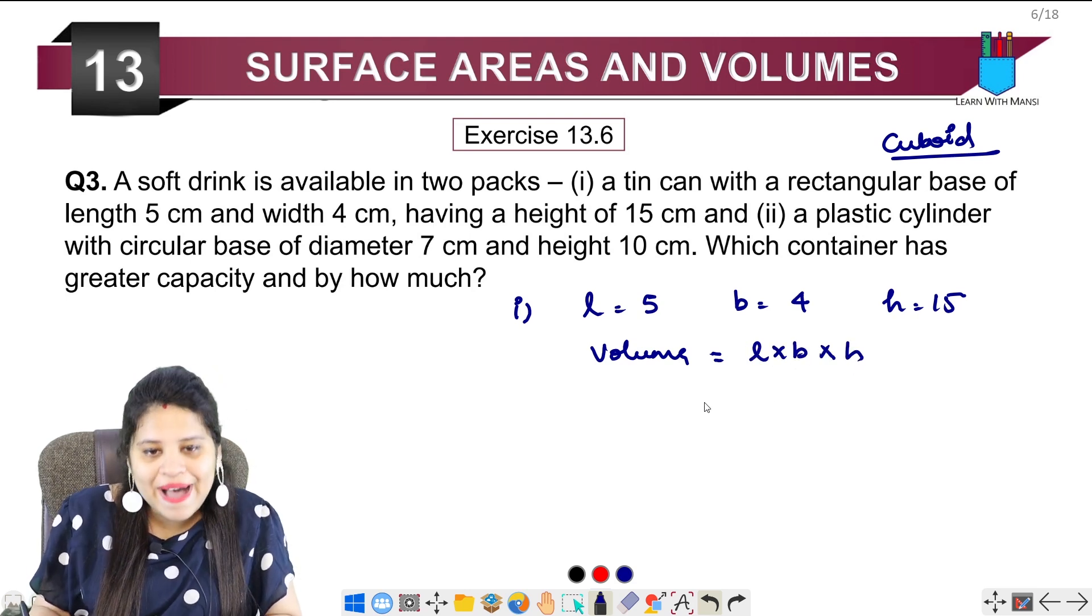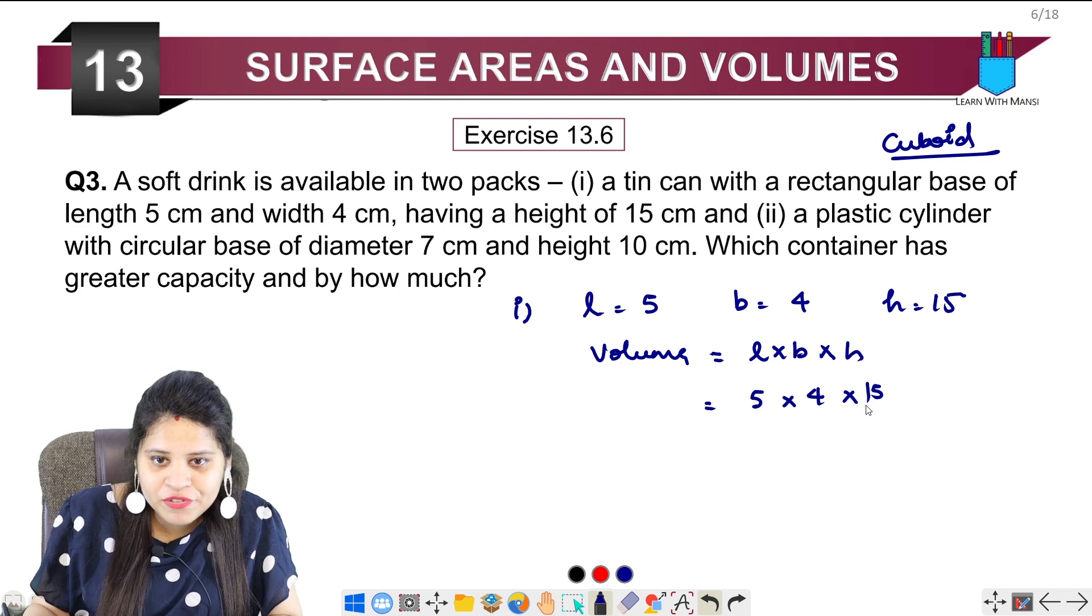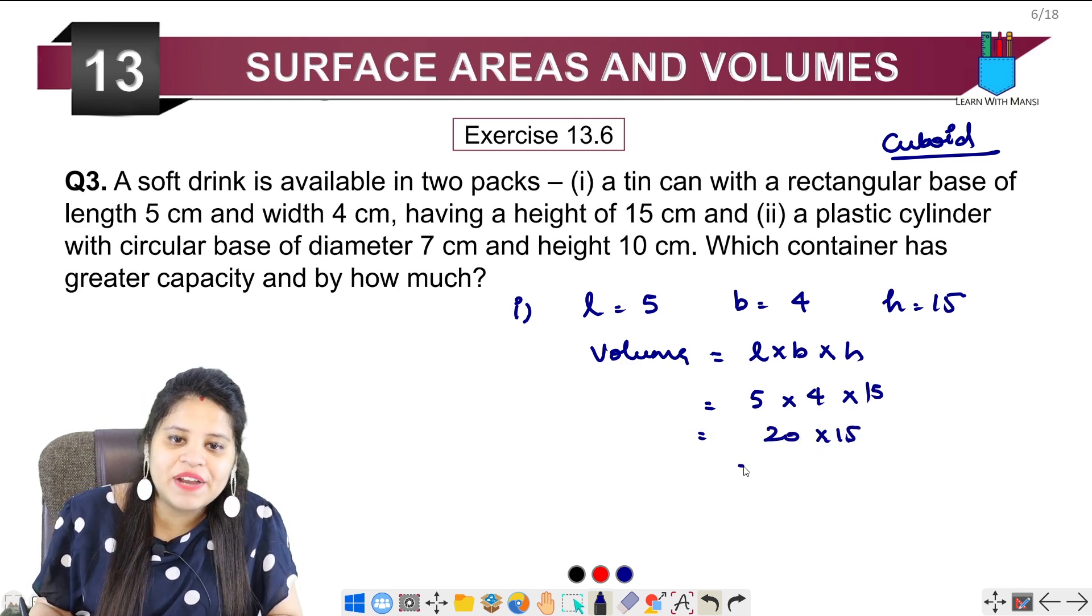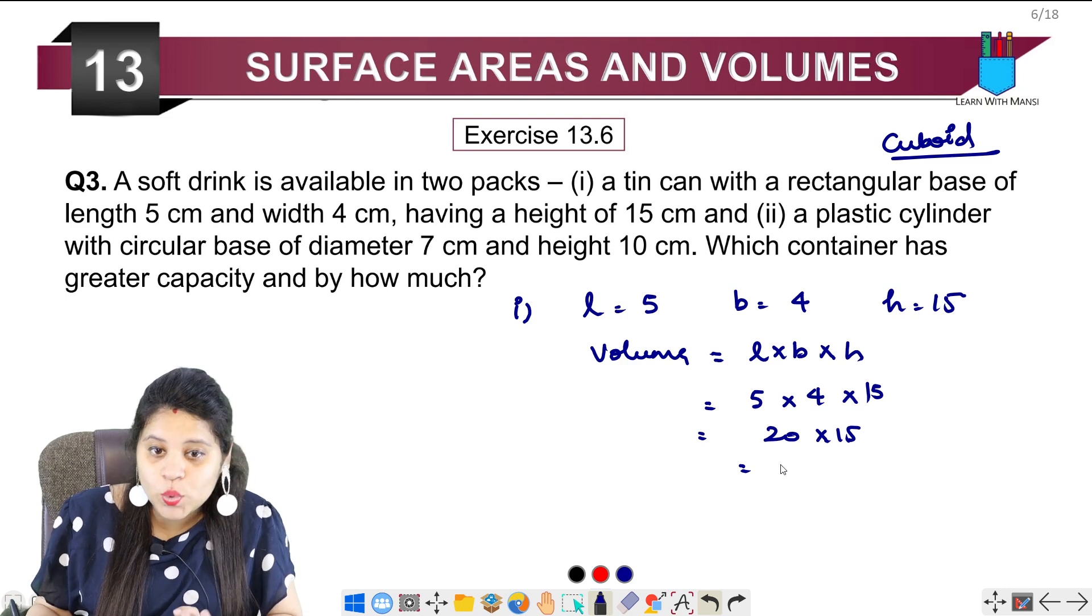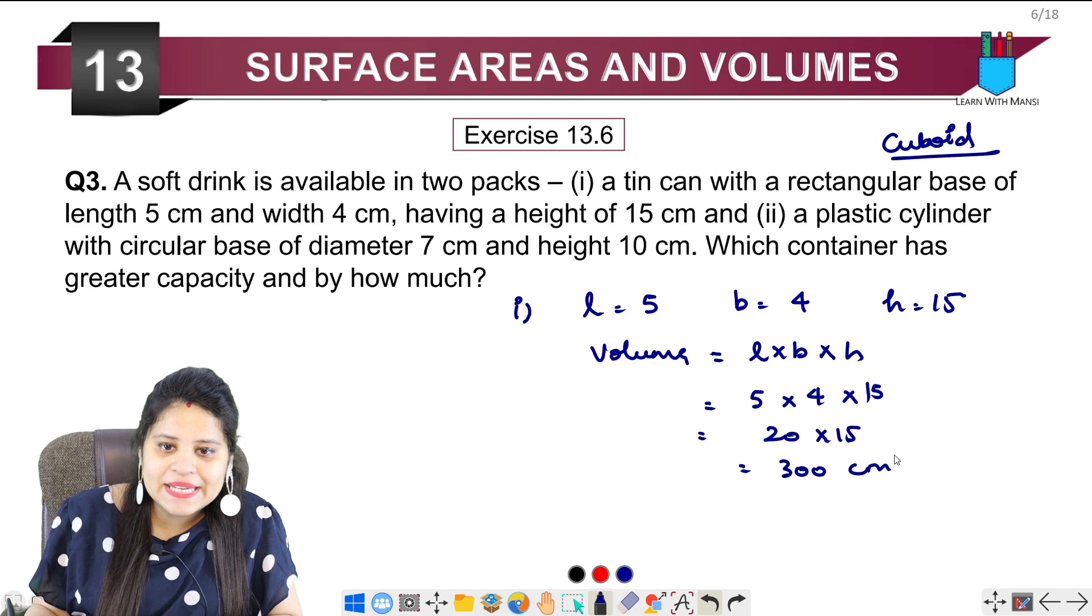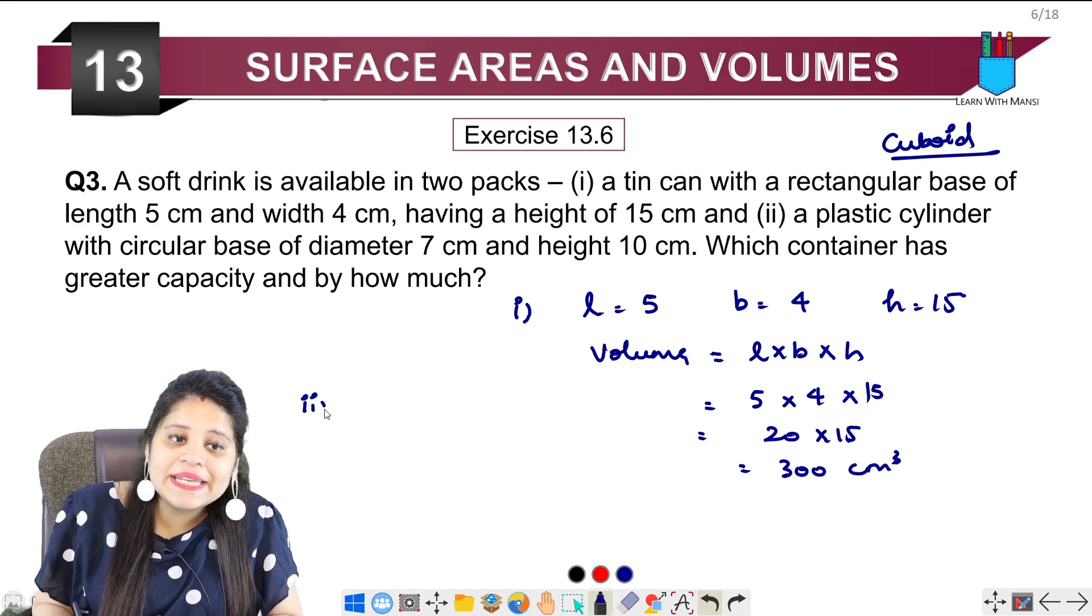Length is 5, breadth is 4, and height is 15. So this is going to be 20 into 15, which is 300 centimeter cube. So this is the first volume.